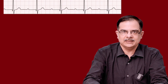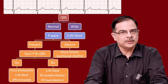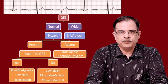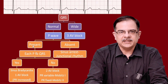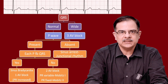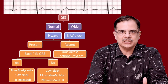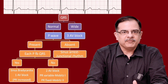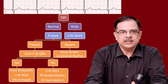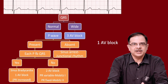Moving to the third ECG, applying the same flowchart: QRS complex is normal in breadth. P wave is present just before the QRS, as shown by the pointer. Each P is followed by QRS — yes. So there are two differential diagnoses: sinus bradycardia or first degree AV block. In first degree AV block, PR interval will be more than 5 mm or more than one big square width. Here the PR interval is more than one big square width, so the diagnosis is first degree AV block.